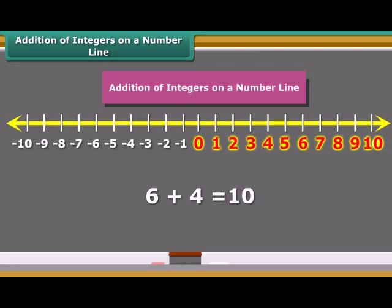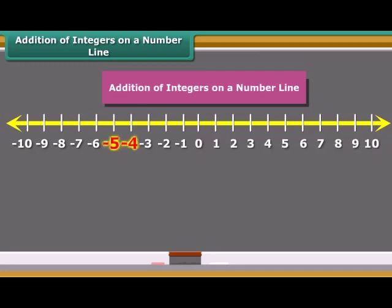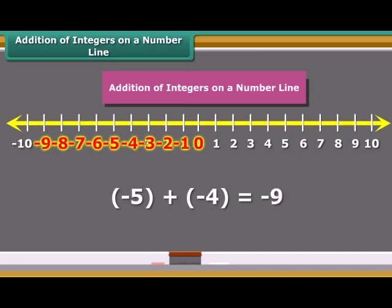Let us add two negative numbers, minus 5 and minus 4, on the number line. In this case, first we move five steps to the left of 0 reaching minus 5, and then we move four steps to the left of minus 5 and reach minus 9. So we see, when we add two positive integers, their sum is a positive integer. When we add two negative integers, their sum is a negative integer.